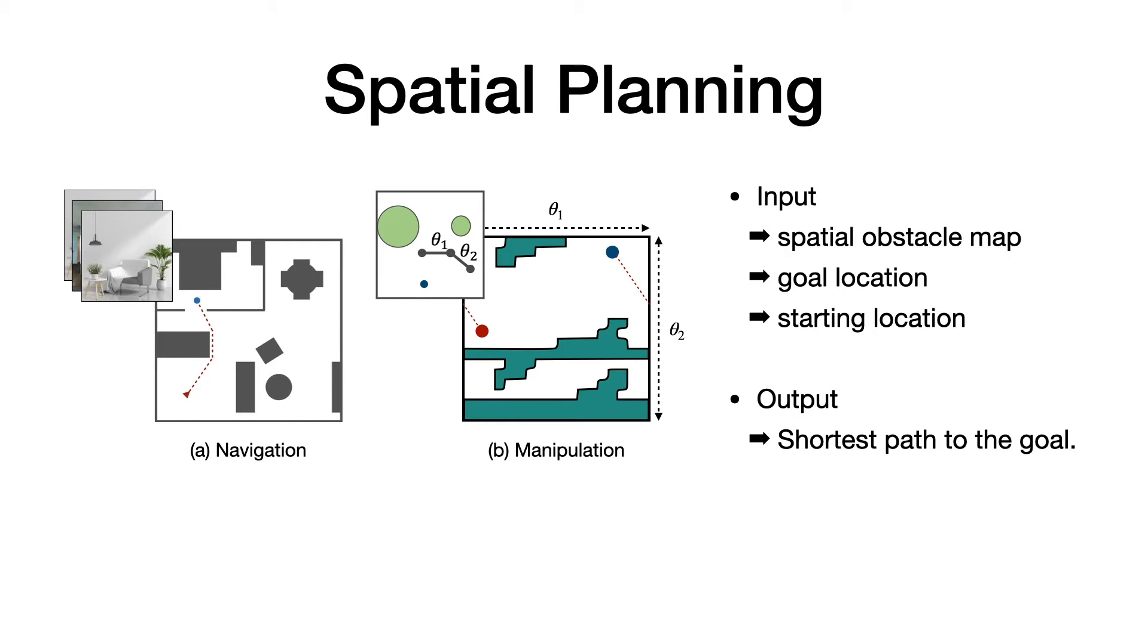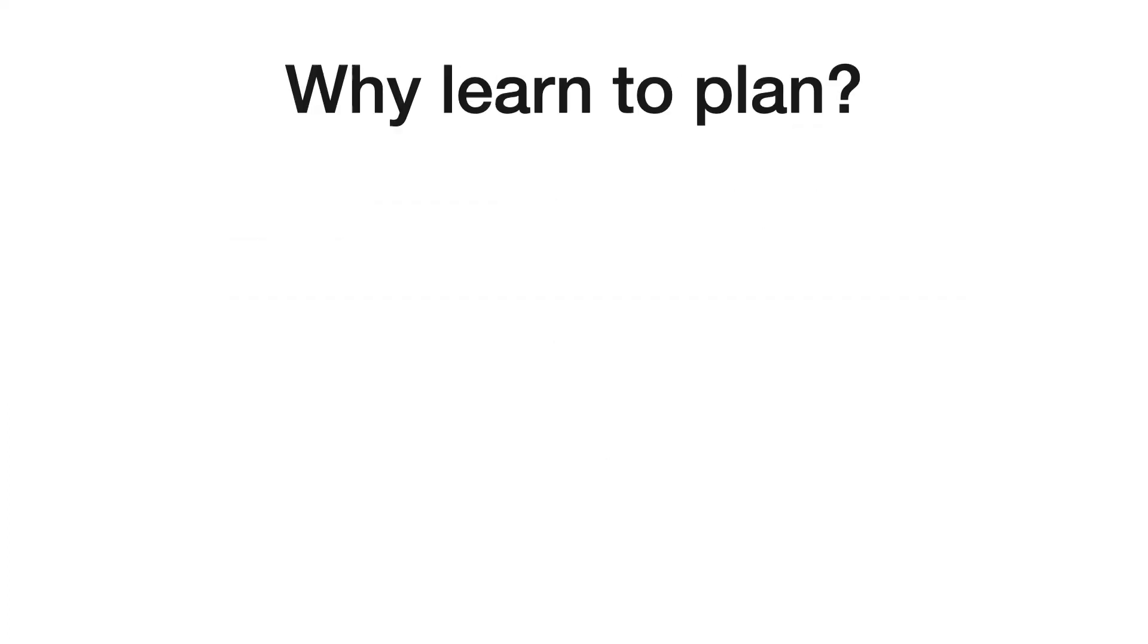The map is spatial as opposed to any arbitrary graph, which means that there is some regularity and distances between elements of the map. Our objective is to develop methods that can learn to plan from data. A natural question is why do we need machine learning for a problem which has stable classical solutions like Dijkstra and A-star?